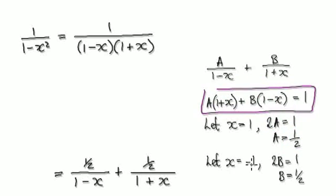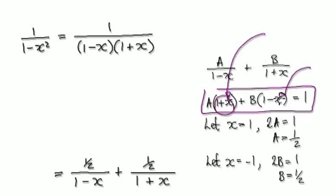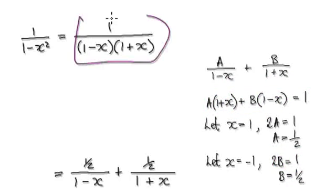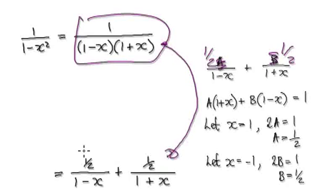Looking back at this, when x equals negative one, if you put negative one in here, this thing here will be zero. One take away negative one will be two. Two times B gives you 2B equals one, so B must equal a half. So if you break it up into two different fractions, this would be a half and this would be a half, which takes you to here.